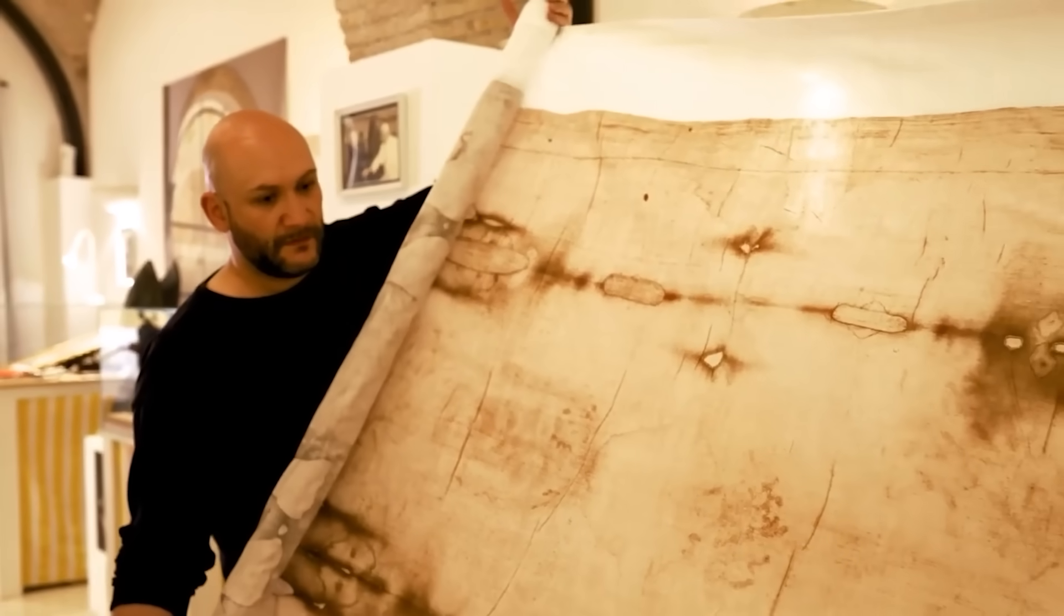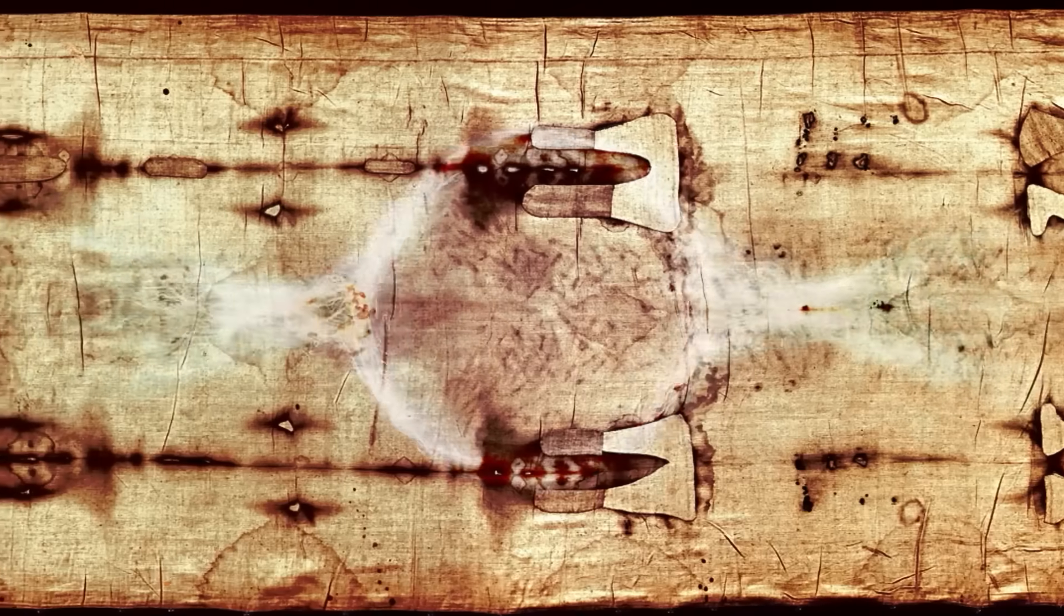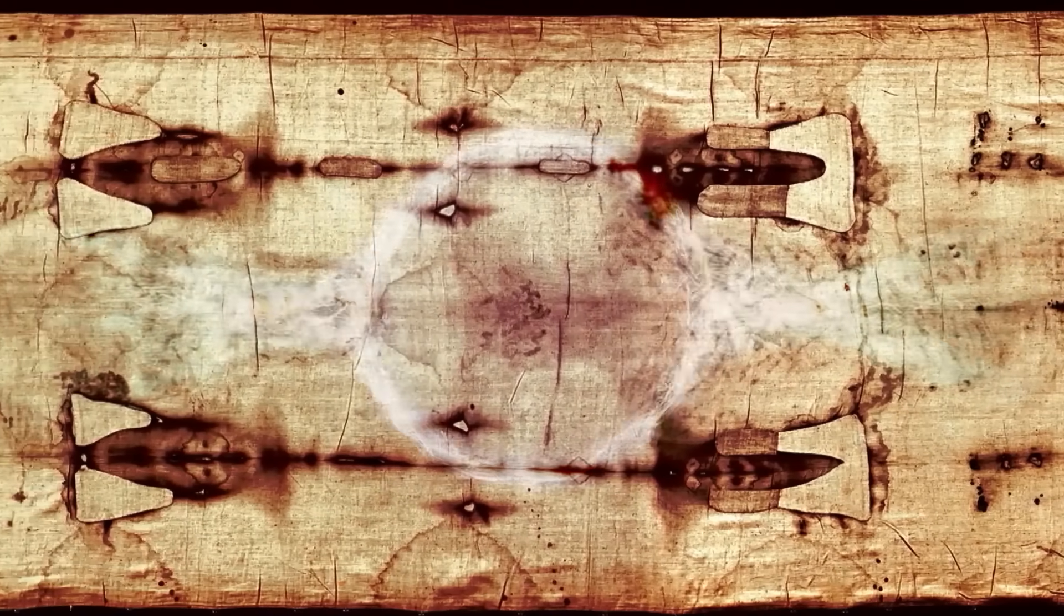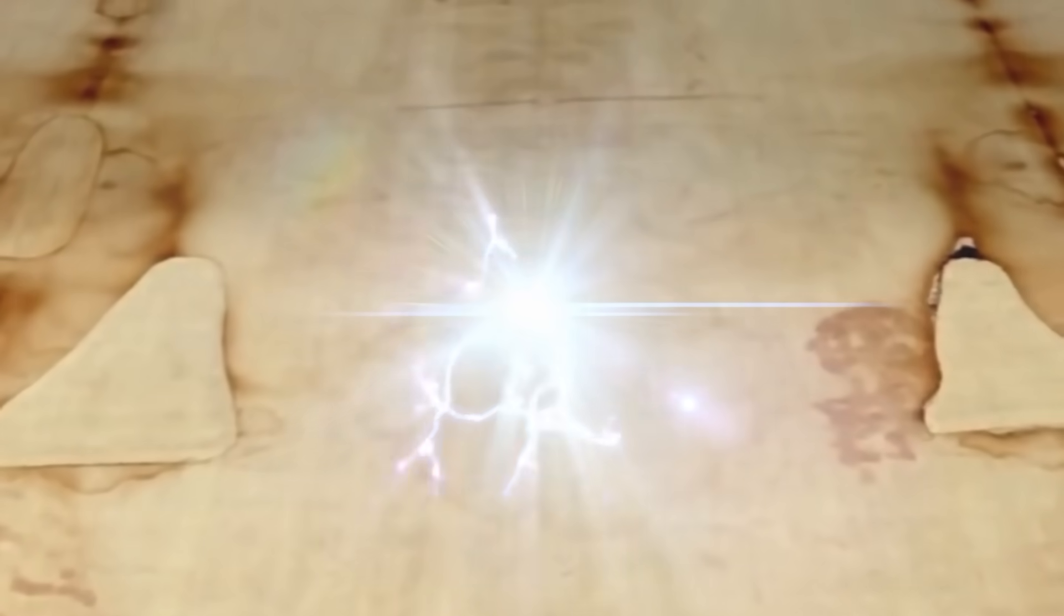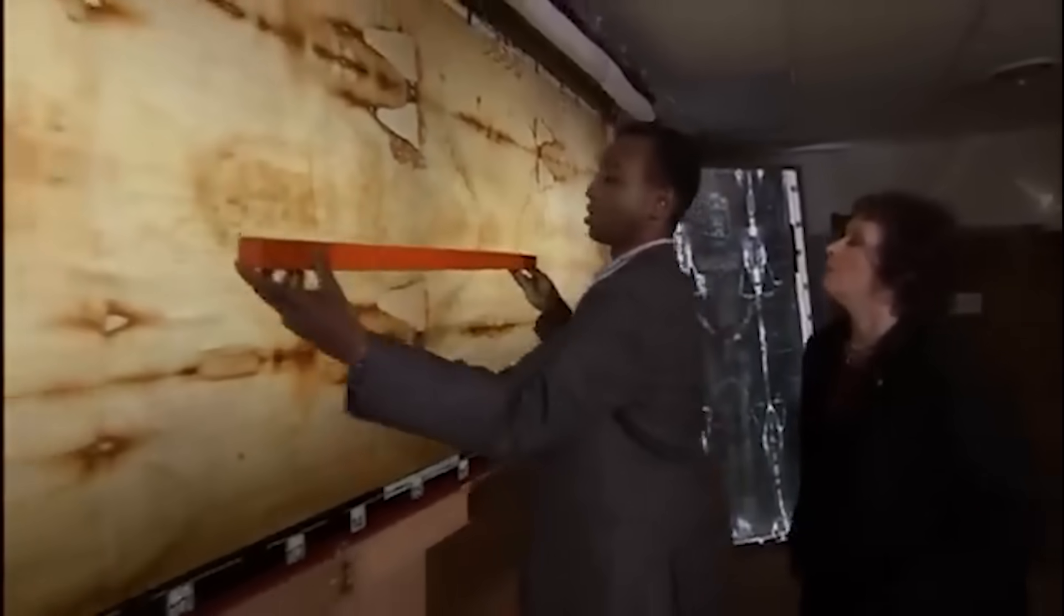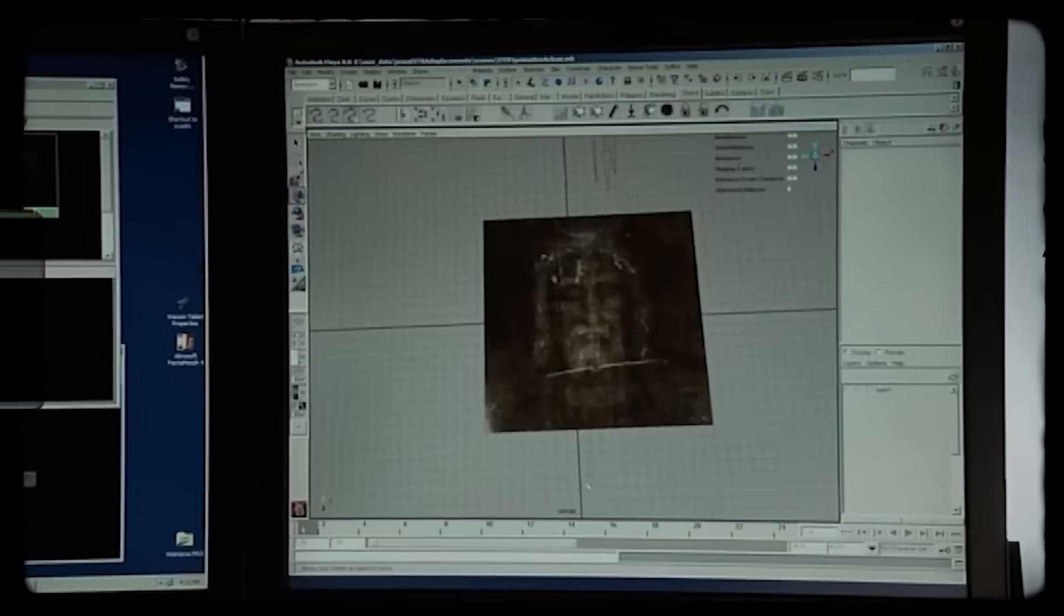Scientists have proposed all sorts of theories to explain this. One is the corona discharge theory, where a high-voltage electrical field around a body could cause an image to form on a nearby cloth. Another involves a short, intense burst of radiation, perhaps ultraviolet light, that essentially scorched the image onto the top layer of the linen fibers. The problem is, experiments to test these theories have never been able to reproduce all the unique features of the shroud. They might get the superficial nature of the image right, but they fail to replicate the perfect three-dimensional data and the hidden geometry.